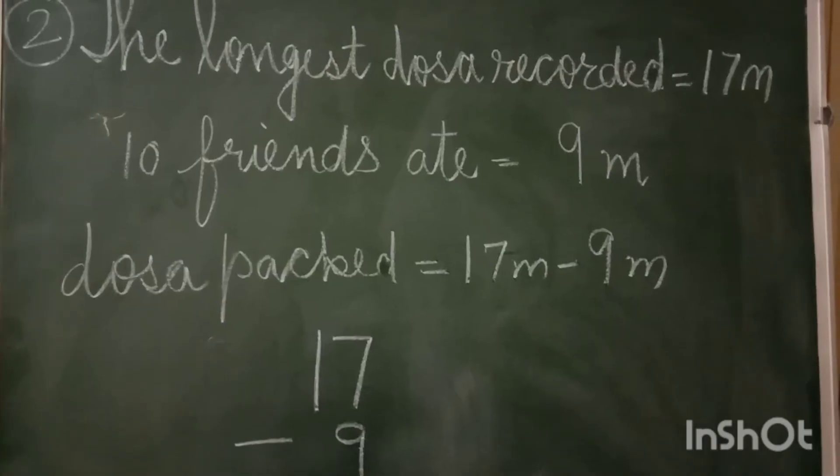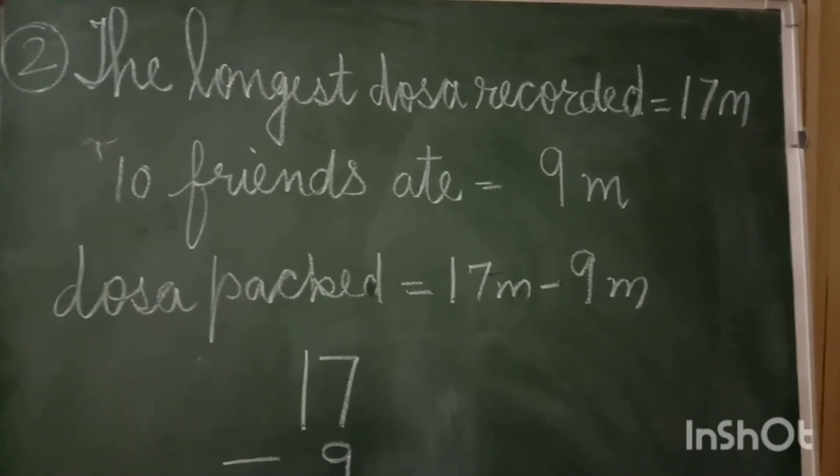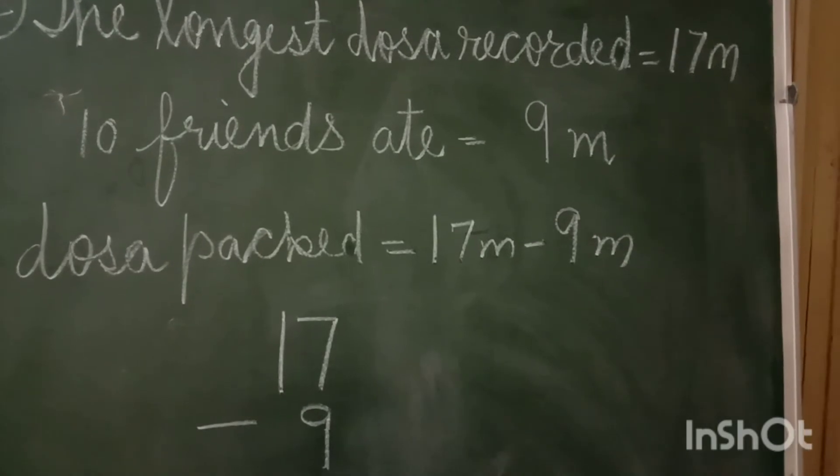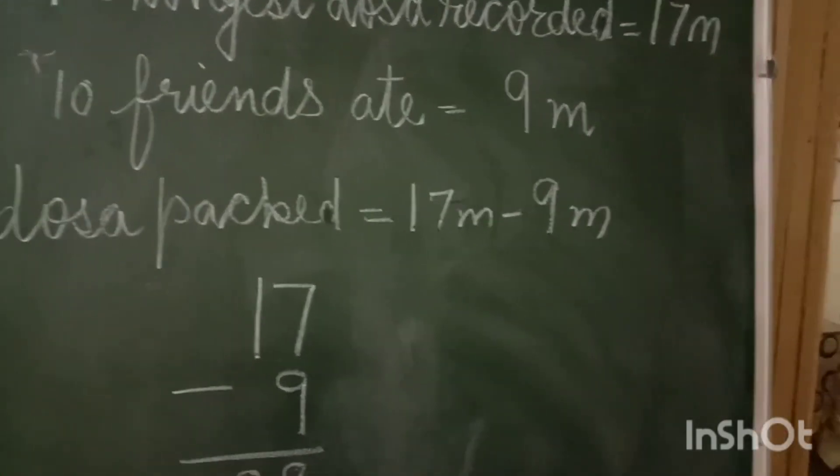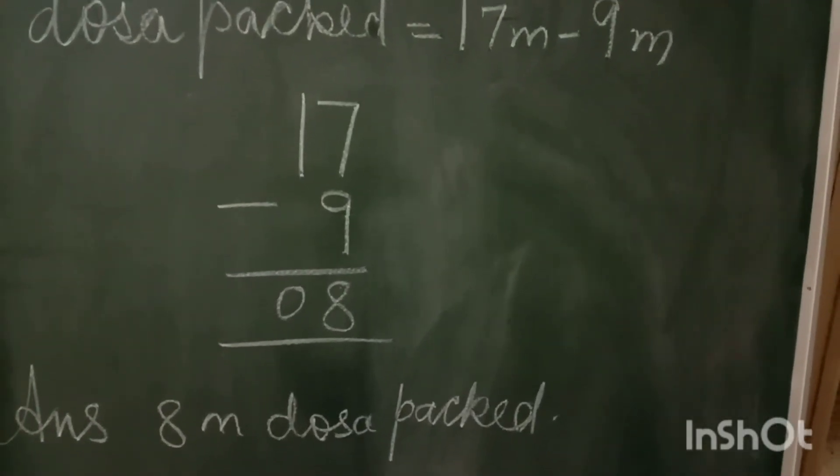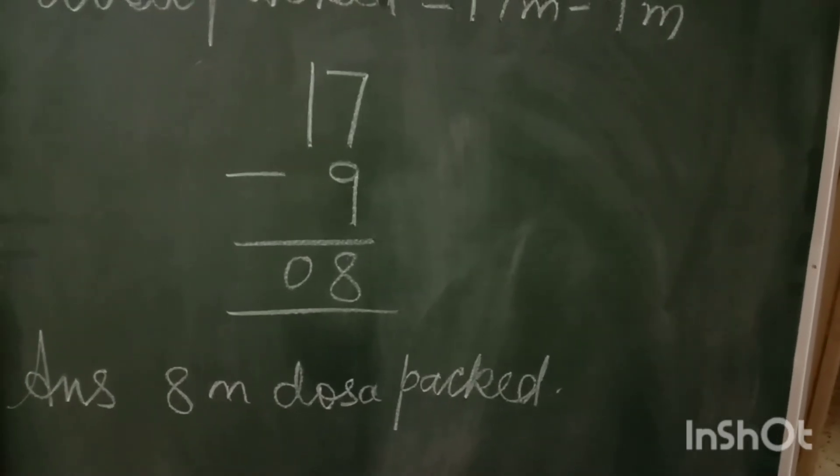How can you find out? By subtraction. So solution of this sum is: the longest dosa recorded is equal to 17 meters. 10 friends ate equal to 9 meters. Dosa packed: you have to subtract 17 minus 9. You know the subtraction, and the answer you got is 8. So 8 meters dosa packed.